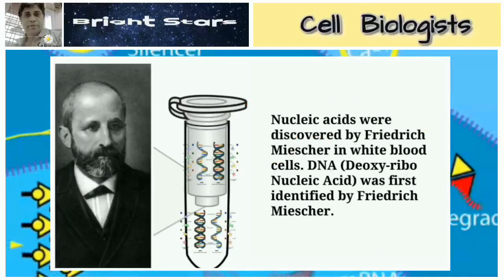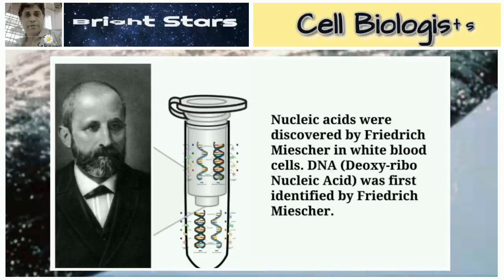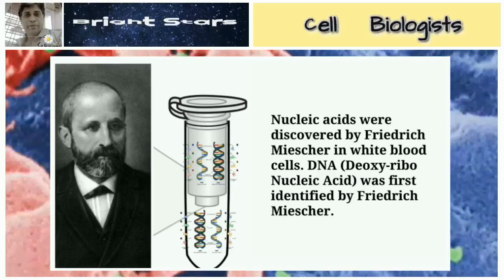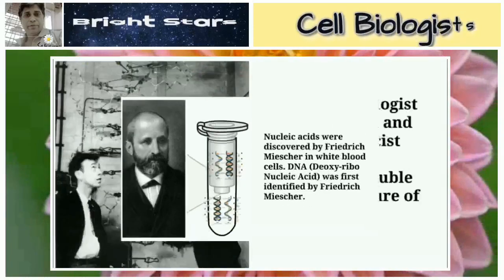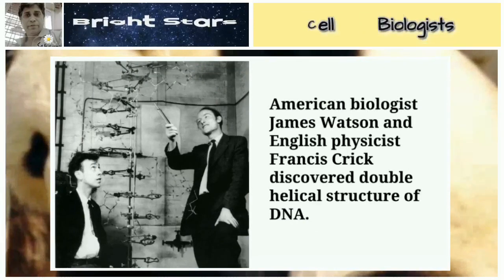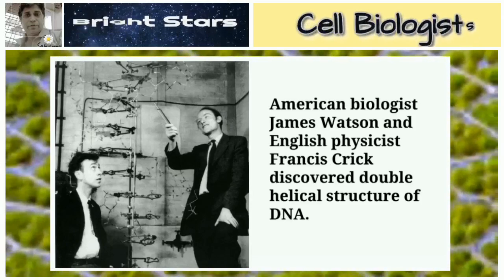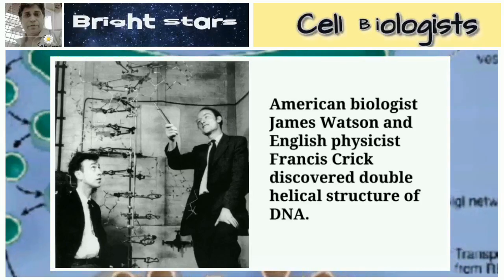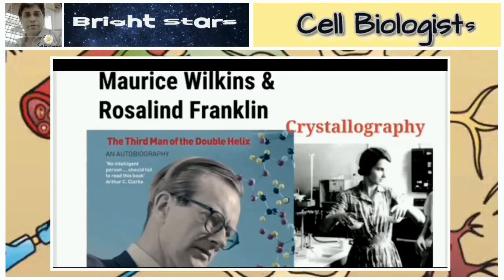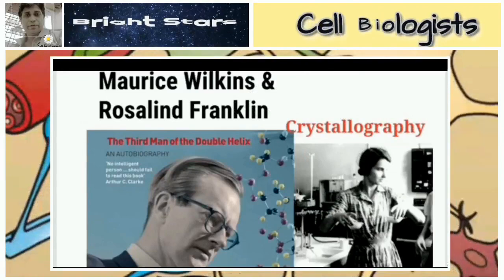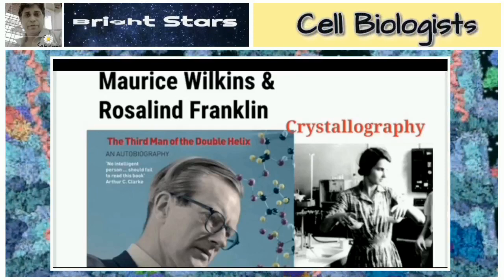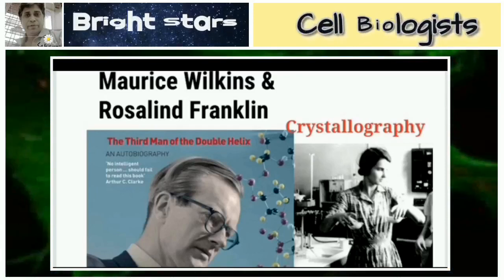DNA — deoxyribonucleic acid — was first identified by Frederick Miescher in white blood cells. American biologist James Watson and English physicist Francis Crick discovered the double helical structure of DNA. Maurice Wilkins and Rosalind Franklin were famous for laying the foundation for the discovery of the double helical structure of DNA by Watson and Crick.